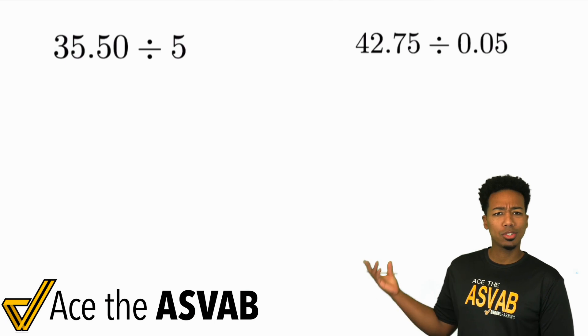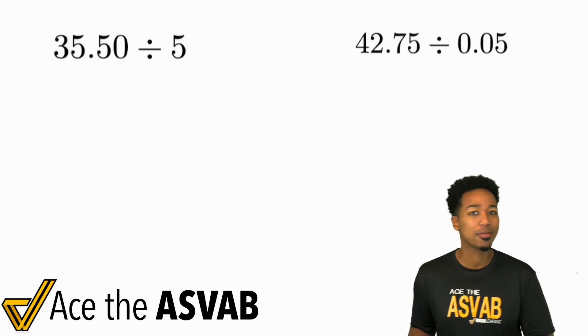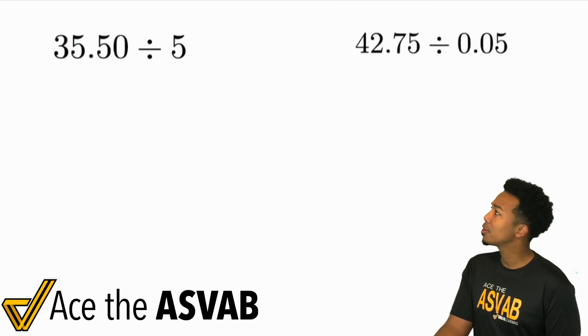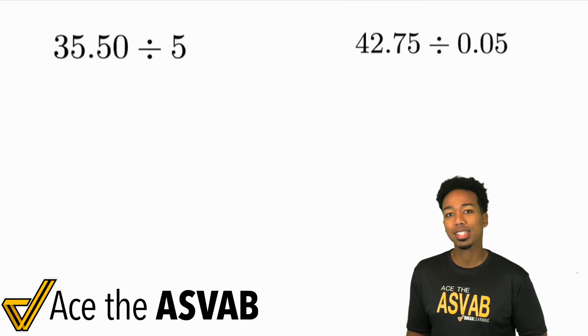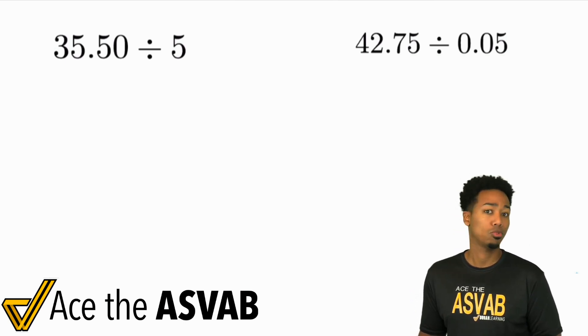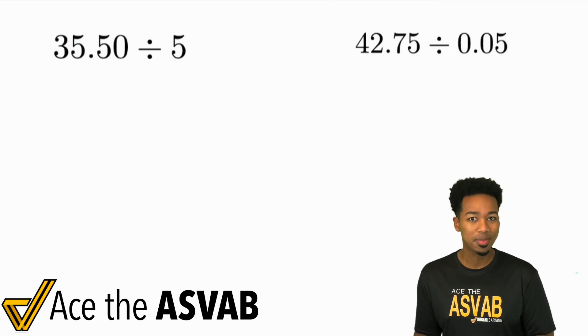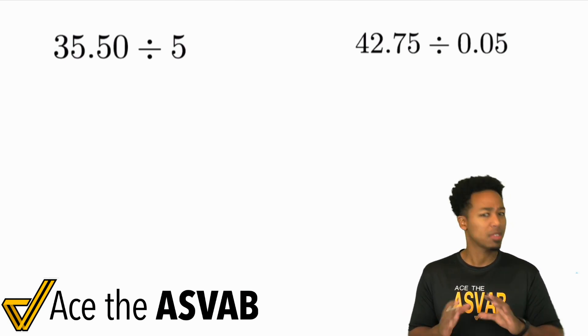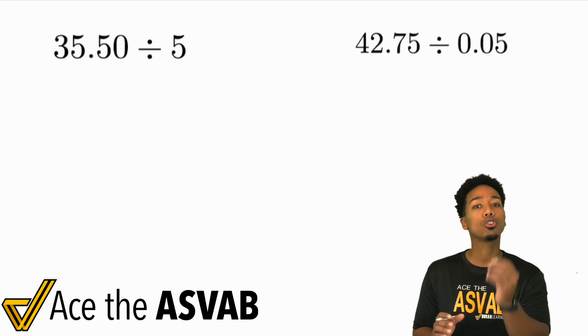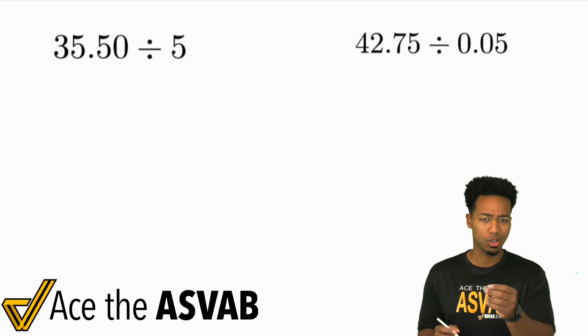So we're looking at two different problems here, and I'm going to solve both of them for you. The first one, 35.5 divided by 5. Then the other one, it's going to be 42.75 divided by 0.05. So if at this point you're feeling any sort of anxiety, any sort of nervousness, that's natural, don't worry. But I'm going to show you exactly how to handle these. So let's get to it.